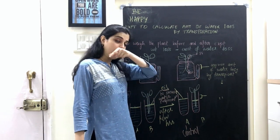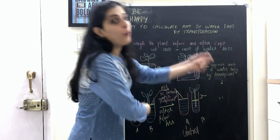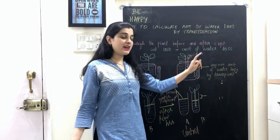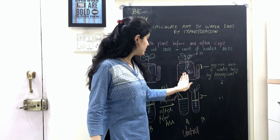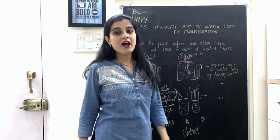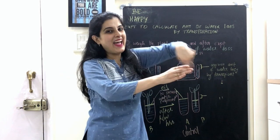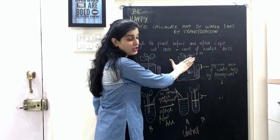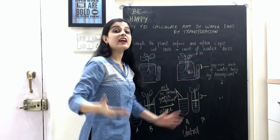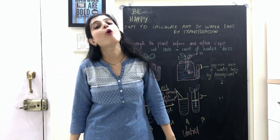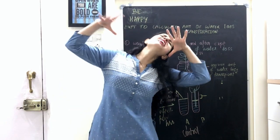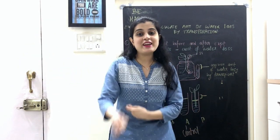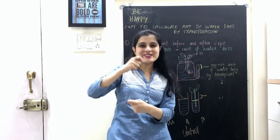Transpirational pull: water loss by transpiration creates a suction force which helps in the ascent of sap. Ascent means upward movement; sap means water and minerals. If transpiration occurs, the suction force pulls sap upward against gravity. So the major force contributing to the ascent of sap is transpirational pull.